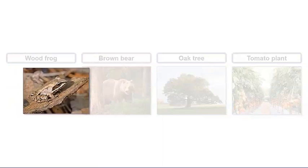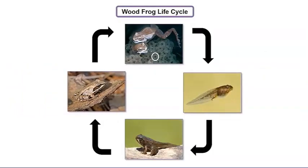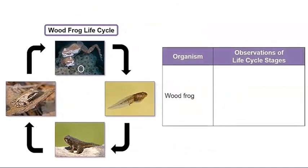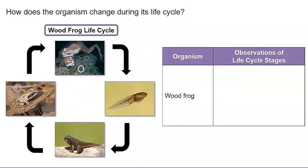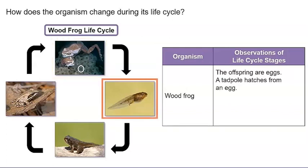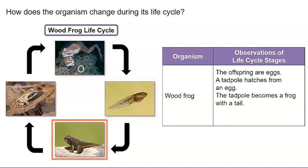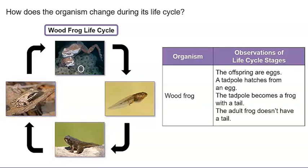Let's start with the wood frog. Some of the photographs that we observed today will have circles on them, like this photograph does. Pay attention to what is inside the circles on those photographs. What do you observe about the organism at each stage? Let's record our observations in this chart. How does the organism change during its life cycle? The offspring are eggs. A tadpole hatches from an egg. The tadpole becomes a frog with a tail. The adult frog doesn't have a tail.